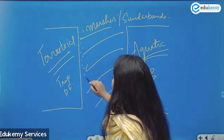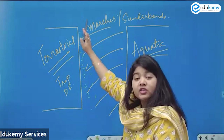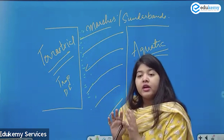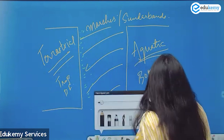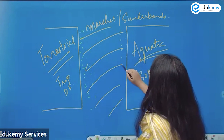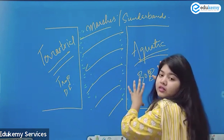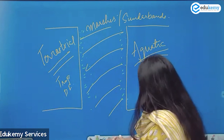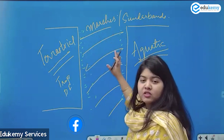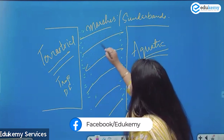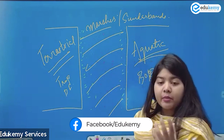Will the region of Sundarbans have species or animals similar to the terrestrial ecosystem? Yes. The region adjacent to the terrestrial or tropical deciduous forest will have animals similar to that ecosystem. Similarly, the region closer to the aquatic ecosystem will have species similar to the aquatic ecosystem — more fish varieties, more turtles, more frogs. But as we move into the interior, the respective populations will decrease over time.